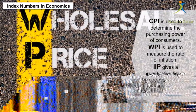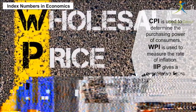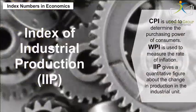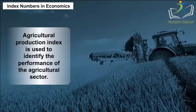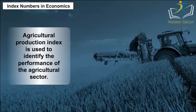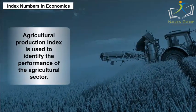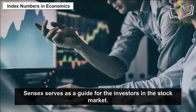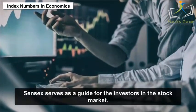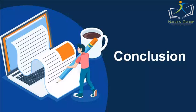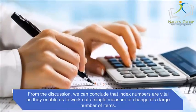WPI is used to measure the rate of inflation. IIP gives a quantitative figure about the change in production in an industrial unit. The Agricultural Production Index is used to identify the performance of the agricultural sector, and Sensex serves as a guide for investors in the stock market.